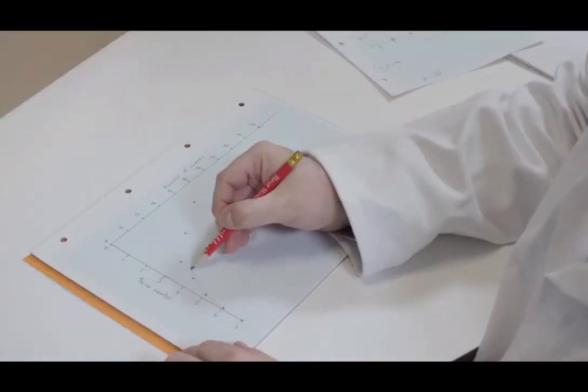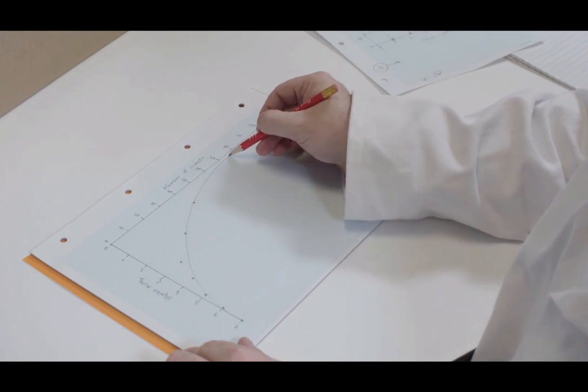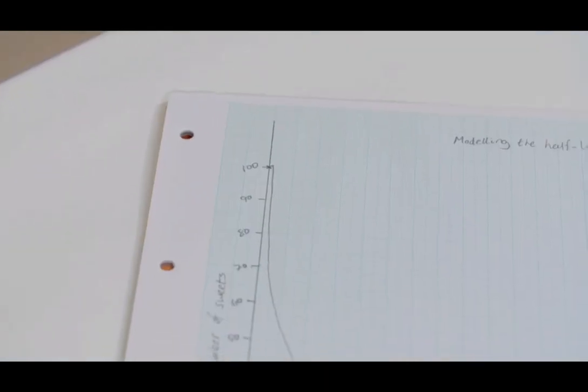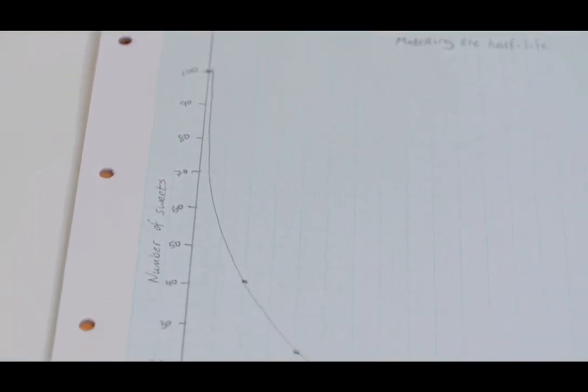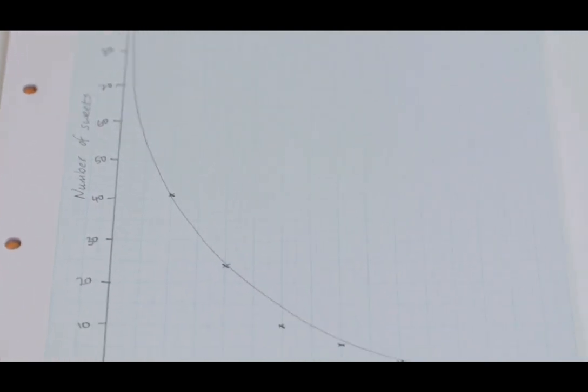Finally, the points on the graph are connected using a line of best fit. This graph is showing exponential decay. It can be used to deduce the half-life in the model.